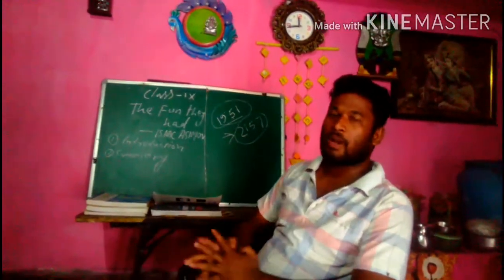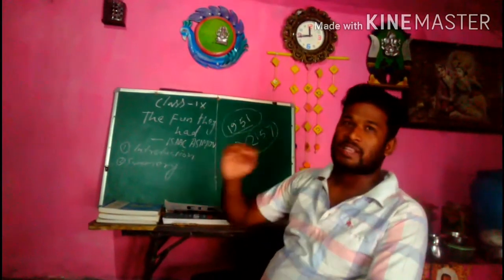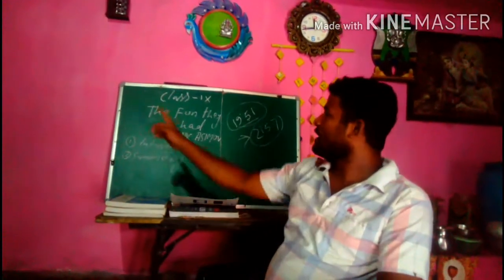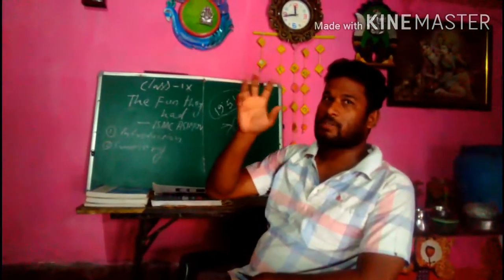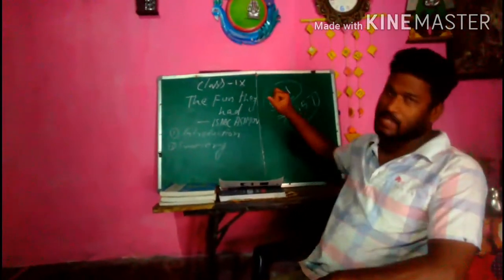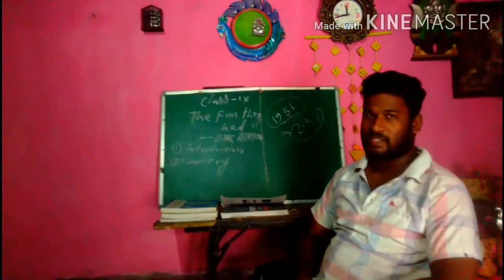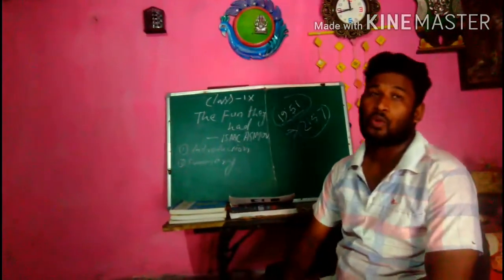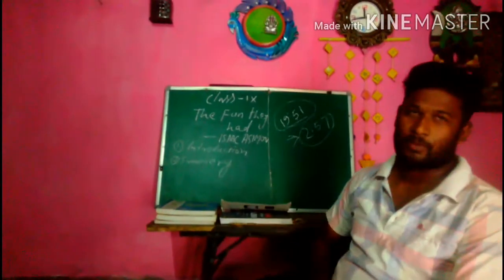At that future time, real books still exist, but they have a total science-based class. They have robots as teachers. They have a screen, and they have thousands of books stored in a small space. The basic difference between today and the time that is yet to come is what the main theme of the story.